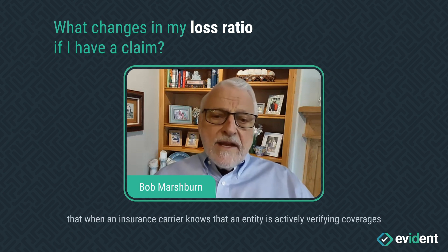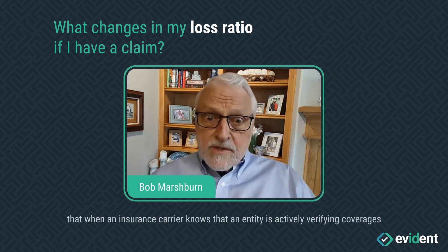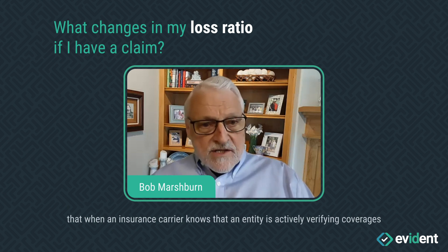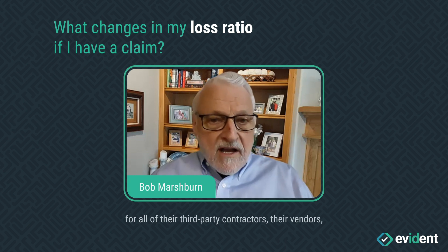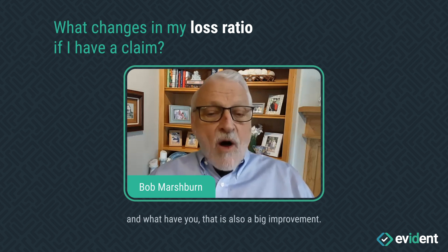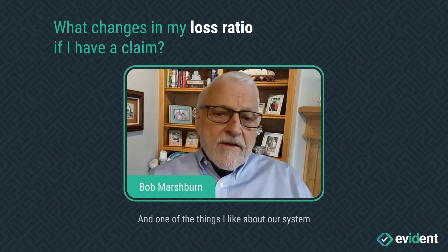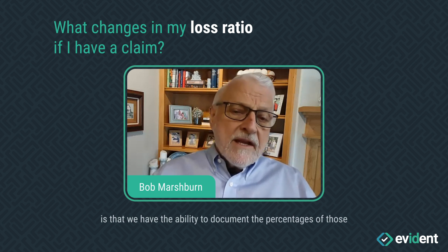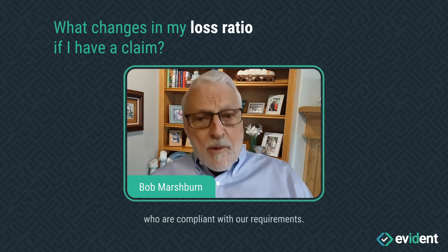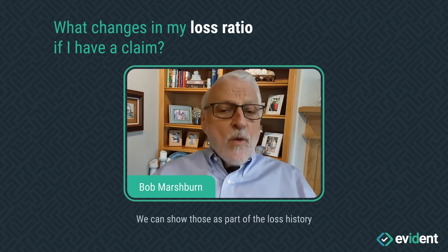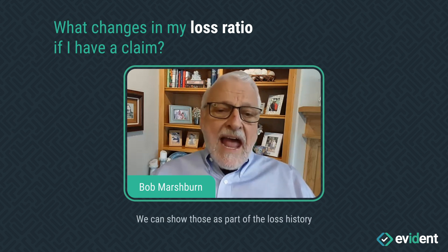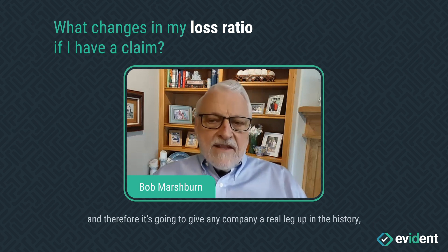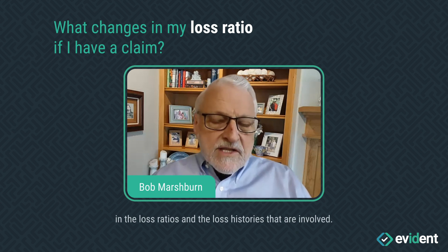When an insurance carrier knows that an entity is actively verifying coverages for all of their third-party contractors and vendors, that is also a big improvement. One of the things I like about our system is that we have the ability to document the percentages of those who are compliant with our requirements. We can show those as part of the loss history, and therefore it's going to give any company a real leg up in the loss ratios and the loss histories that are involved.